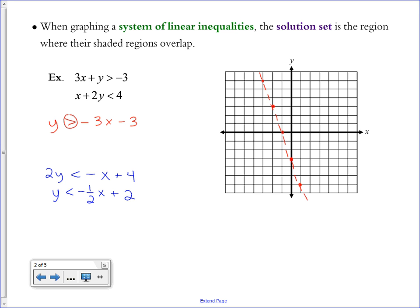To determine which side to shade on I like to plug in (0,0) which is on one side of the line and determine if that's part of the solution set or not. Simplifying this tells me that 0 is greater than negative 3, which is true. Therefore the solution set for the red inequality is this half plane.